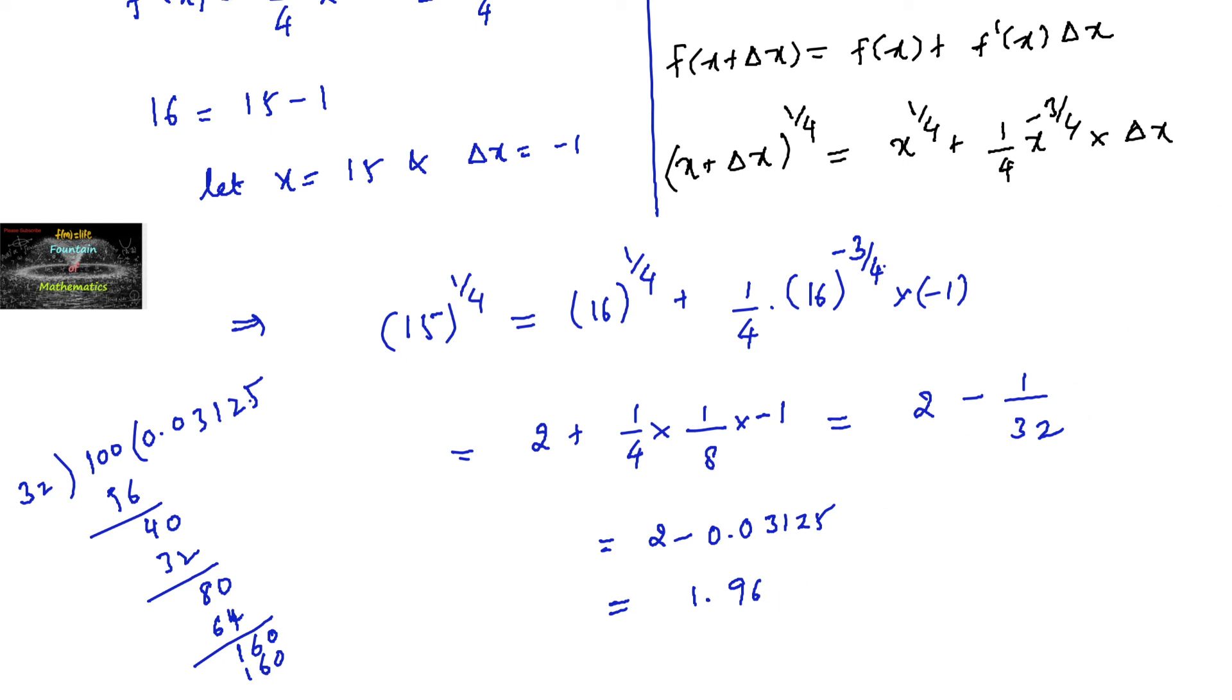This equals 1.96875, which when rounded to three decimal places gives 1.968. So the answer is 15 power 1 by 4 equals 1.968.